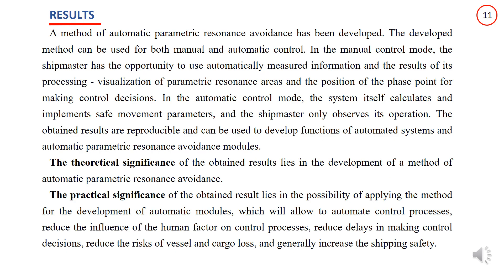A method of automatic parametric resonance avoidance has been developed. The method can be used for both manual and automatic control. In manual control mode, the shipmaster can use automatically measured information, results of its processing, visualization of parametric resonance areas, and the position of the phase point for making control decisions. In automatic control mode, the system itself calculates and implements safe movement parameters, and the shipmaster only monitors its operation.